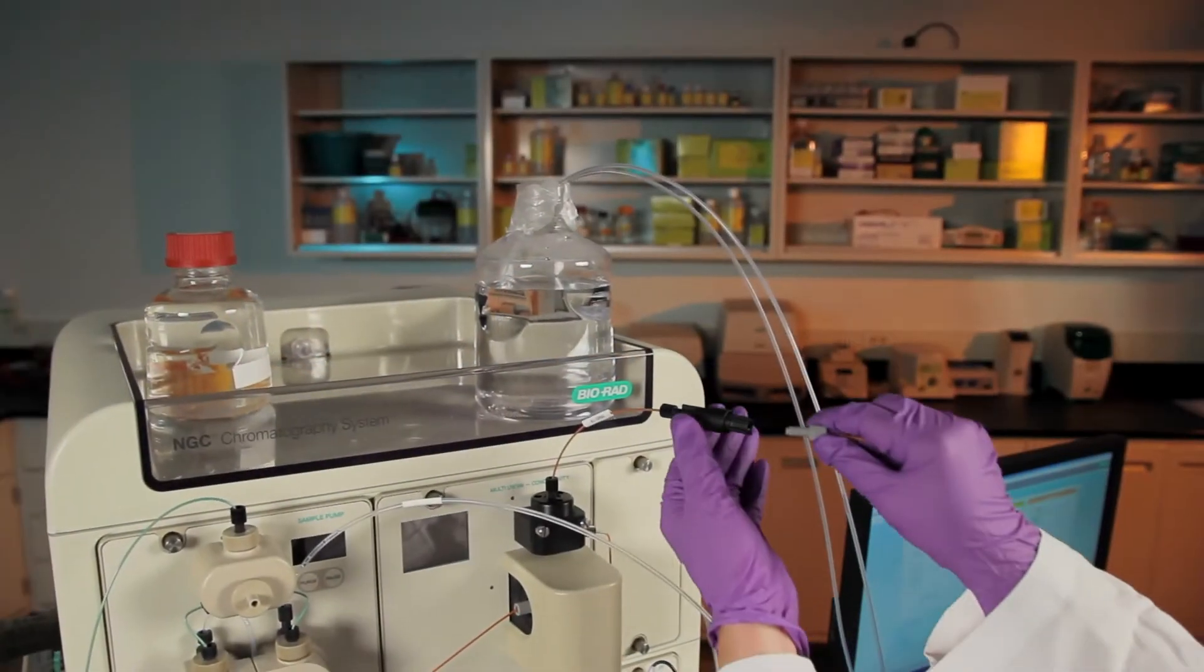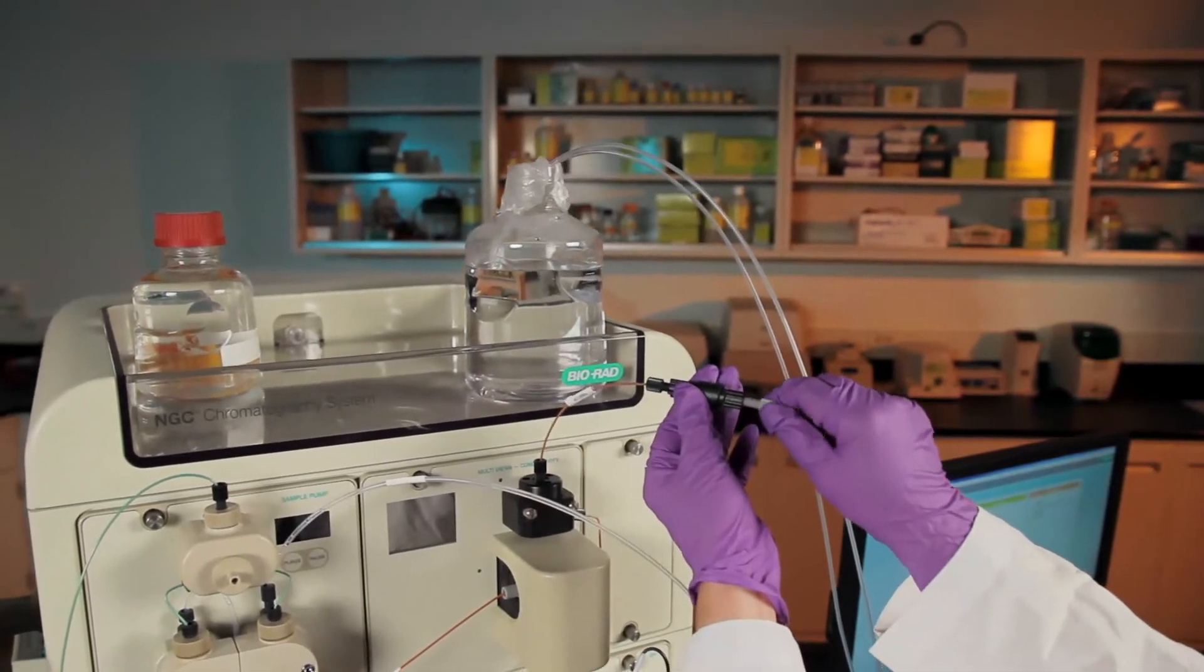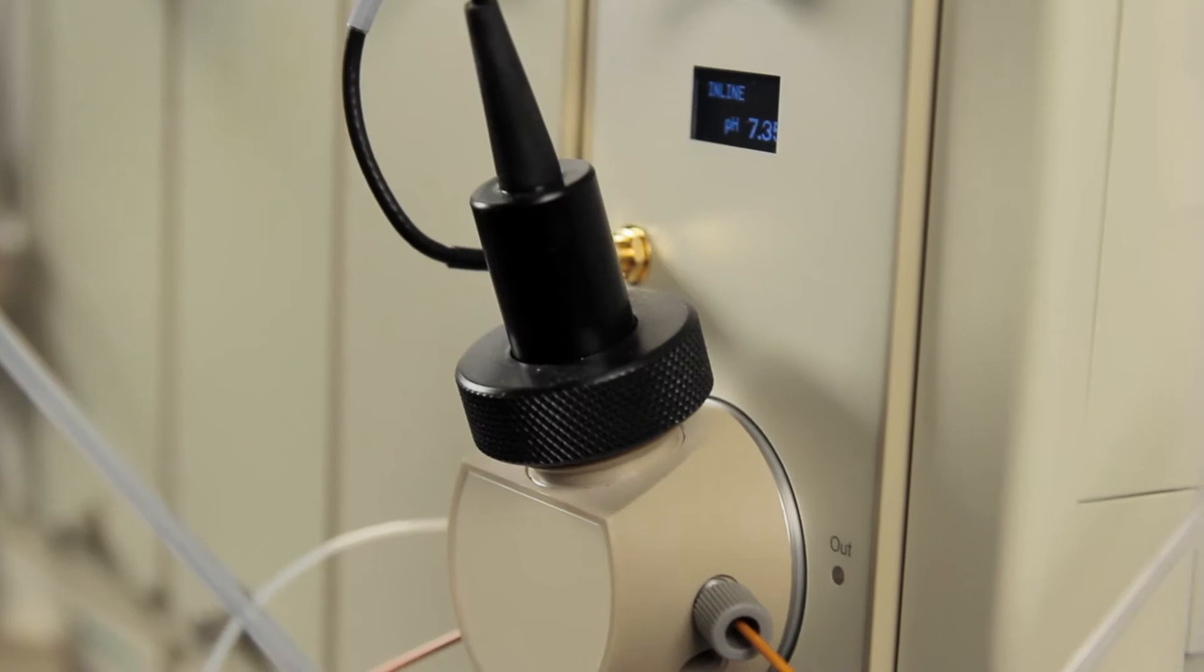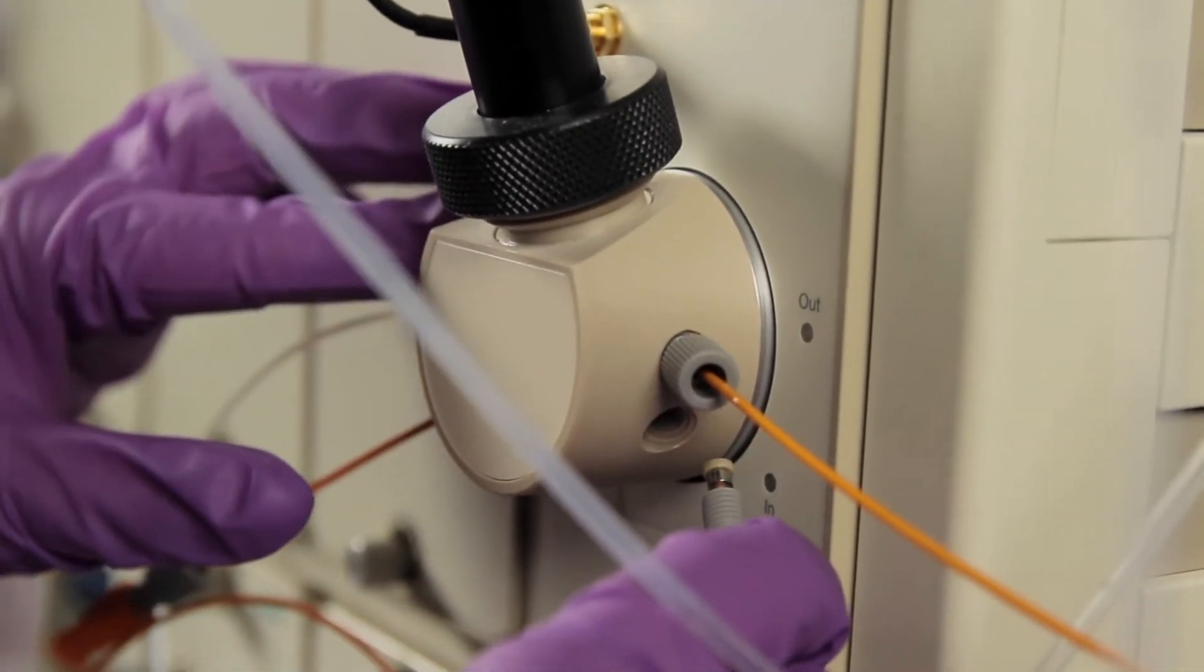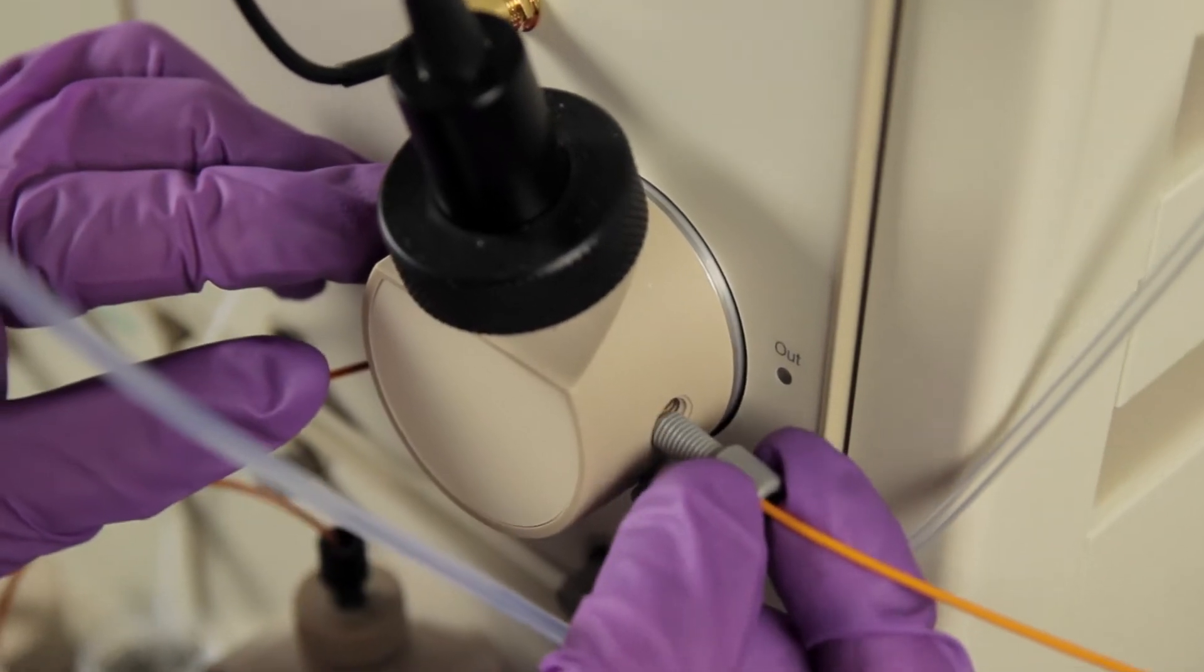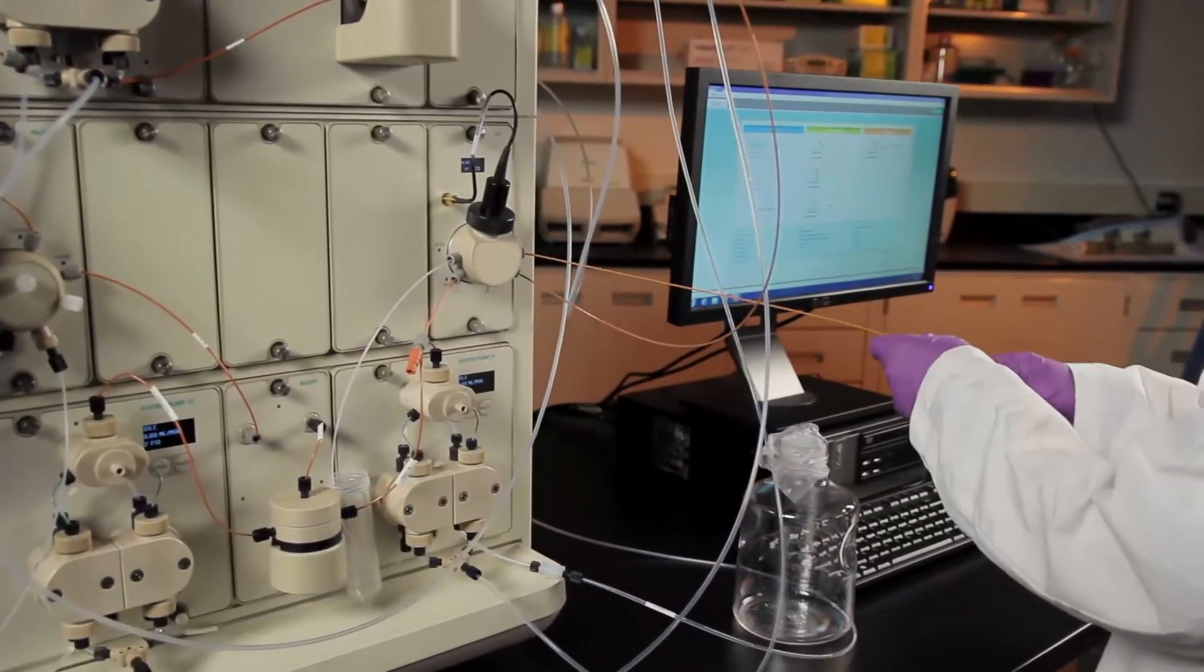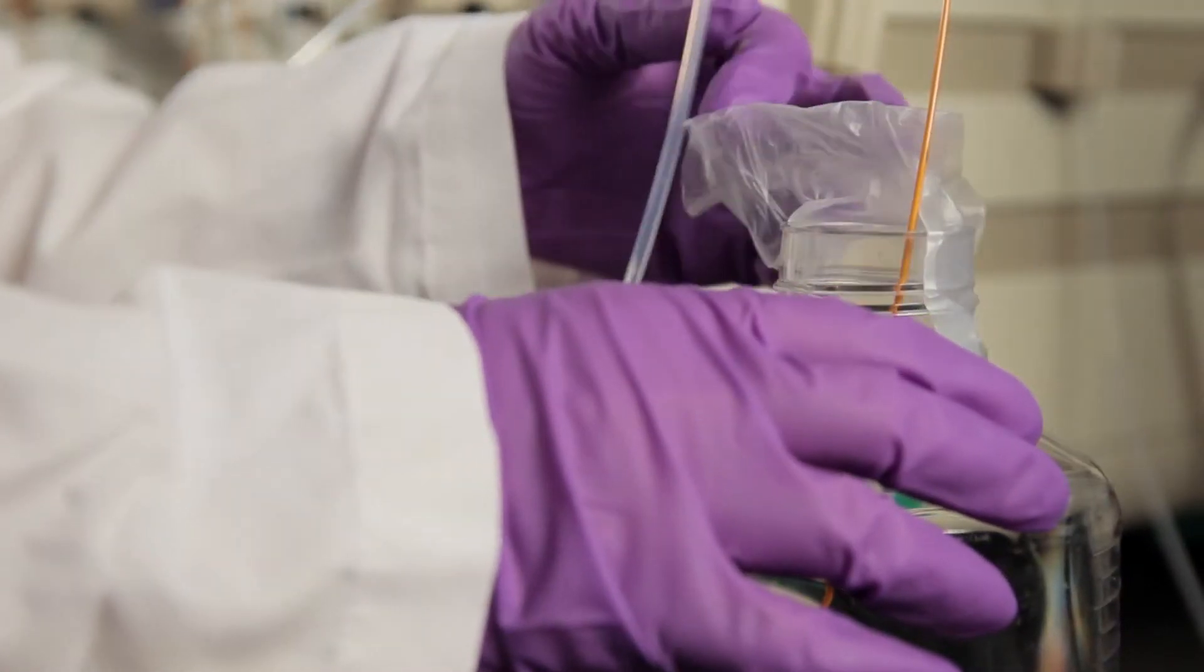To connect the pH valve, attach the outlet tubing from the back pressure regulator or conductivity monitor to the in-port on the pH valve. Then, connect tubing from the pH valve out-port to the diverter valve of the fraction collector, or to the waste reservoir if not using a fraction collector.